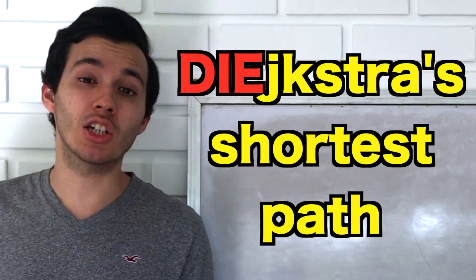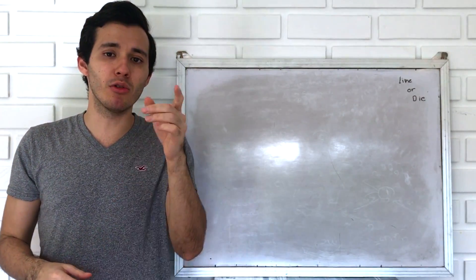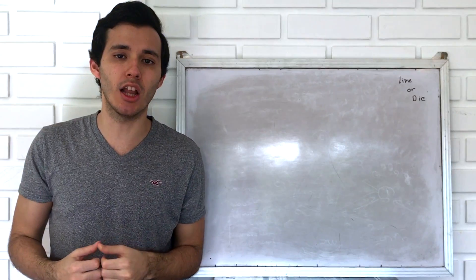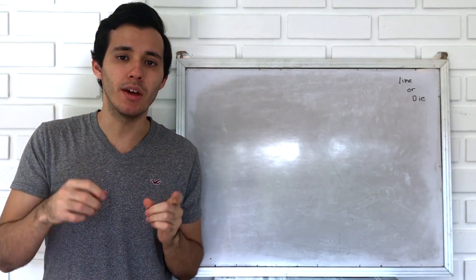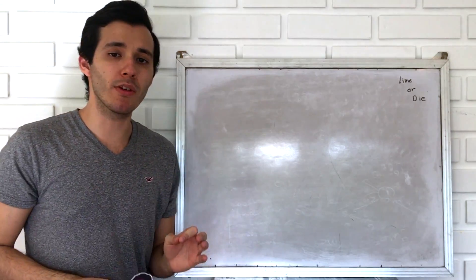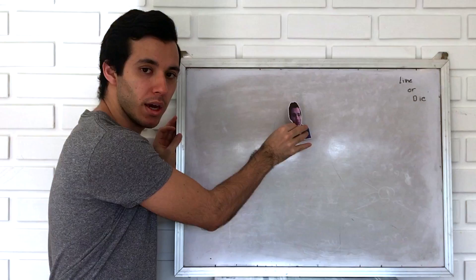Today we will learn Dijkstra's shortest path. And to make things easier, we will use something everyone respects and loves — women. This is how it goes. We start with the most perfect person in the world: me.